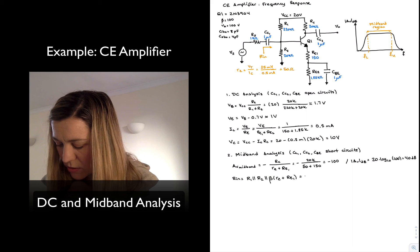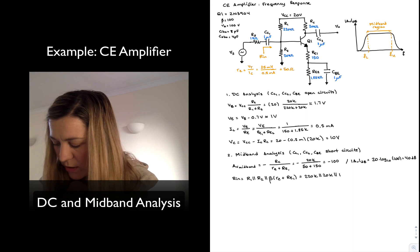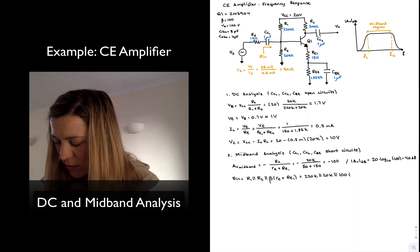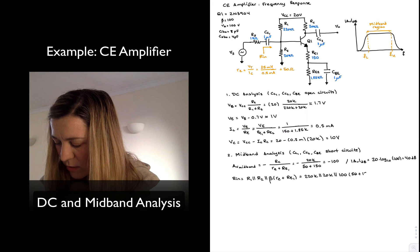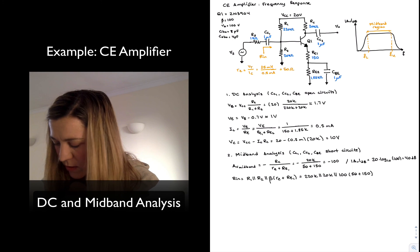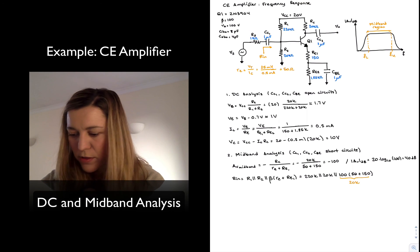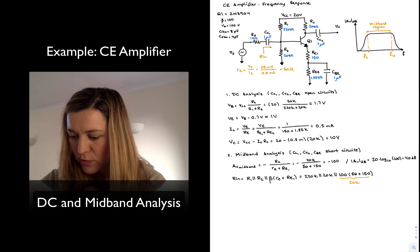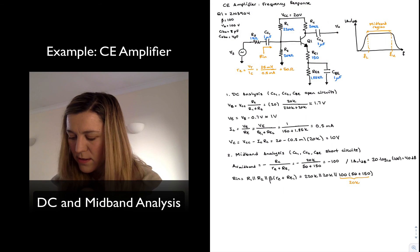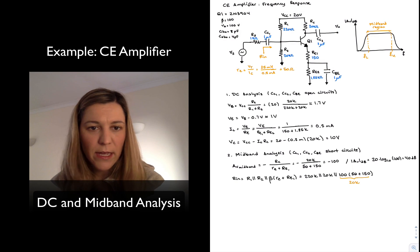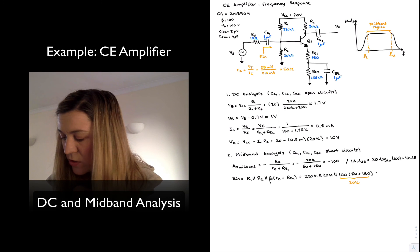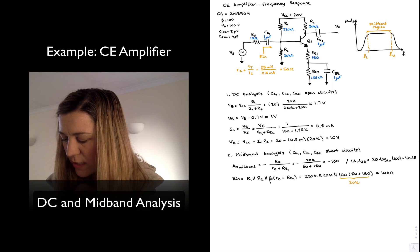And so this is going to be 220k parallel with 20k in parallel with my beta, which was 100 times 50 plus 150. This quantity here is around 20k, which in parallel with 20k is equal to 10k, and that in parallel with 220k, the 10k resistance will dominate, so it's approximately equal to 10 kOhms.